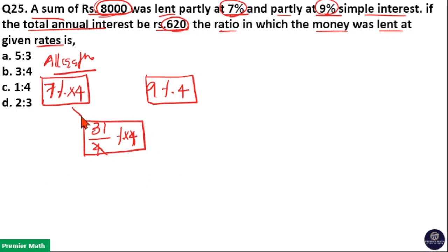Take the difference between left hand side and middle which is equal to 31 minus 28, 3 percentage. So 5 percentage is to 3 percentage means 5 is to 3 is your answer. So option A is your answer.